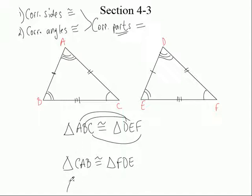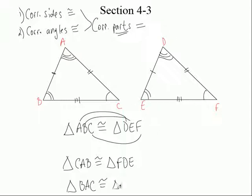Let's do one more. Let's start with B this time — B, A, C. So if I call this BAC, what am I going to have to call this one? E, D, F. So it's triangle EDF. That's not hard to figure out, is it? That was pretty easy because I told you every single angle and every single side that was equal to each other.